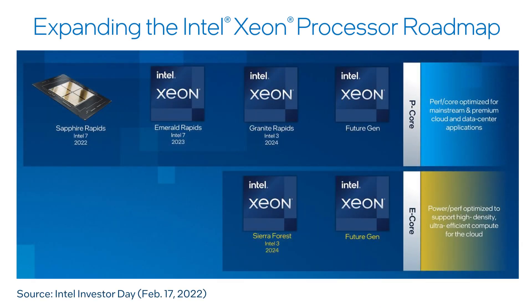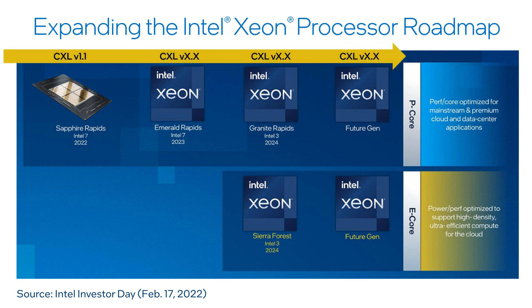The Intel FPGA CXL solution, which supports CXL specification revision 1.1, is available now. Intel Agilex FPGA samples shipping today are also CXL revision 2.0 capable — please contact your local Intel salesperson for more details on the CXL 2.0 FPGA IP rollout. Looking further out, Intel FPGAs have a roadmap to support CXL specification revision 3.0, which is based on the PCIe 6.0 specification.